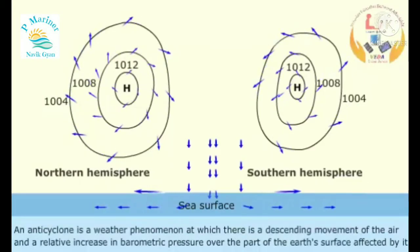An anticyclone is a weather phenomenon in which there is a descending movement of the air and a relative increase in barometric pressure over the part of the Earth's surface affected by it.